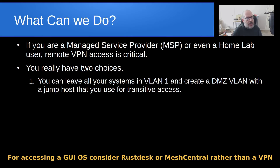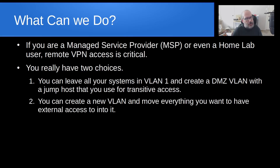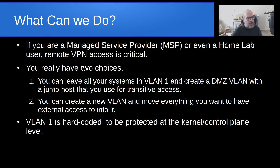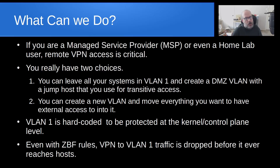If you want your VPN to access an RDP host, like a Windows machine, that's where you'll have more of a problem. Alternatively, you can create a new VLAN — let's call it VLAN 2 — and move everything on your main network that you want to access remotely into that VLAN 2. By doing so, it won't be subject to those restrictions. VLAN 1 is hard-coded to be protected at the kernel or control-plane level of UniFi OS beginning in version 4.4.9, and VPN-to-VLAN-1 traffic is dropped before it ever reaches those hosts — or even before it reaches the firewall.